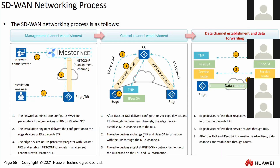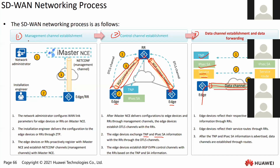After TMP and IPSec SA information are shared, the RR will establish the BGP control channel. Our H devices will then send TMP information, IPSec SA information, and service route information to the RR, which reflects it to other H devices. Once each H receives this information, they will establish the data channel, and H devices will be able to communicate with each other through the data channel. The overall SD-WAN process is: first establish management channel, second control channel, and lastly the data channel.